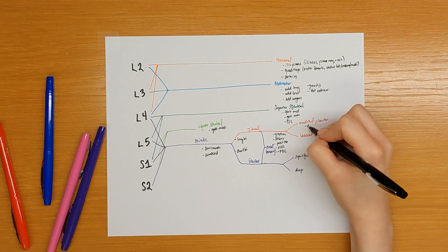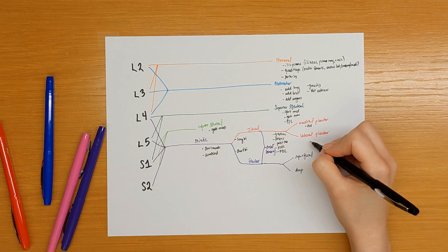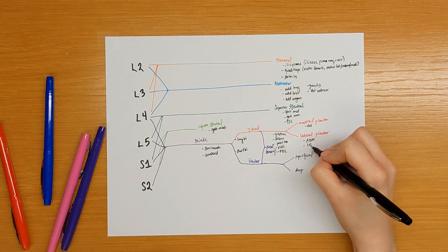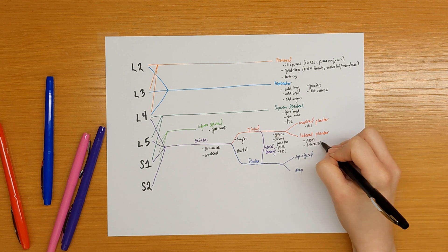The medial plantar branch innervates the abductor digiti minimi in the foot, as well as the interossei in the foot.